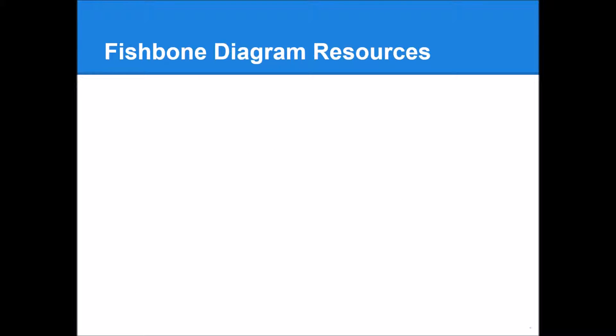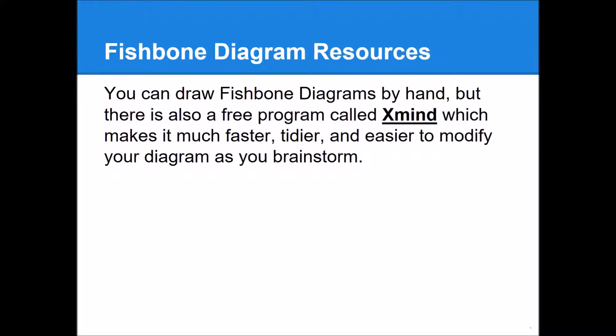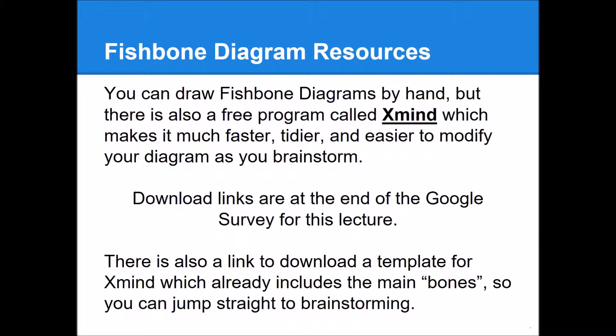You can certainly draw your fishbone diagram by hand, but there's a free tool called XMind, which is a program available for Windows and Mac. It's free and it makes drawing a fishbone diagram really fast. It also makes it really easy to modify as you think of new reasons or decide that perhaps one cause that you thought of should belong in a different category than where you originally put it. I'll include the download links at the end of the Google survey for this lecture. I'll also include a template that you can download for XMind, which already includes the main bones and is pre-formatted so that you can jump straight into identifying your main problem and then listing your potential causes and digging down into those causes.